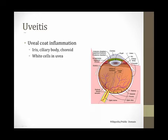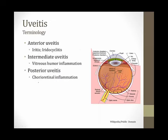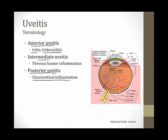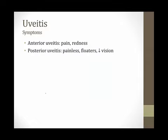When a patient has uveitis, they have inflammation of the uveal coat — white cells found in the uveal layer. There is a lot of terminology depending on which portion of the uvea is involved. Anterior uveitis with iris inflammation is called iritis; if both the iris and ciliary body are inflamed it's called iridocyclitis. Posterior uveitis is sometimes called chorioretinal inflammation because the choroid and retina can be involved. There's also intermediate uveitis involving vitreous humor inflammation. All these varied terms reflect which portion of the uvea is inflamed.